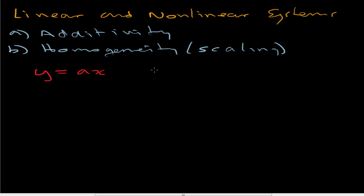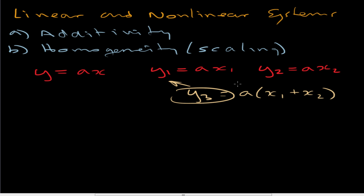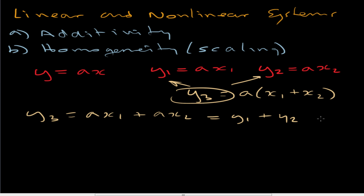Let me explain that more fully. First I apply x1 as an input, that gives me y1. Then I apply a second input x2, that gives me y2. I then apply x1 plus x2 simultaneously, which gives me y3. The question is: what's the relationship between y3 and y1 and y2? If I multiply this out, y3 equals ax1 plus ax2, which is just y1 plus y2. So the combination of the two inputs is the combination of the two outputs separately — this is additivity.